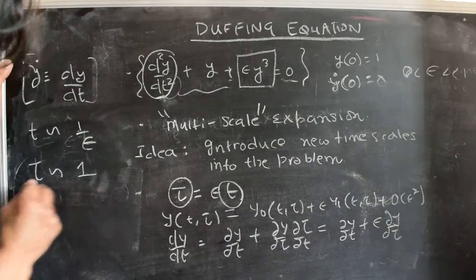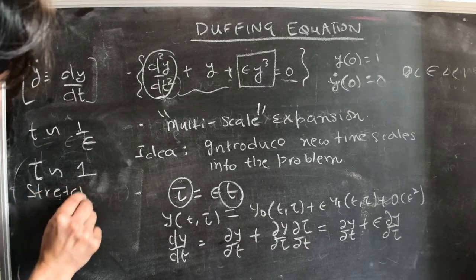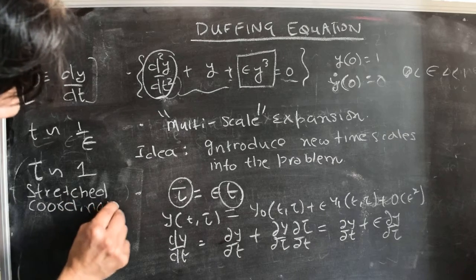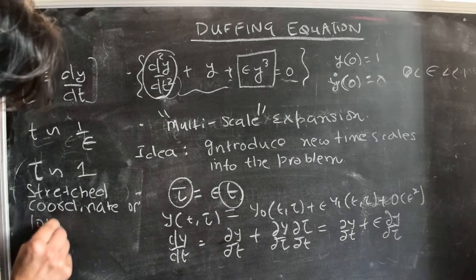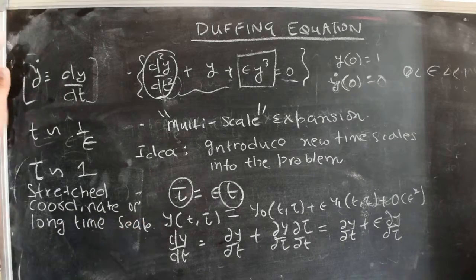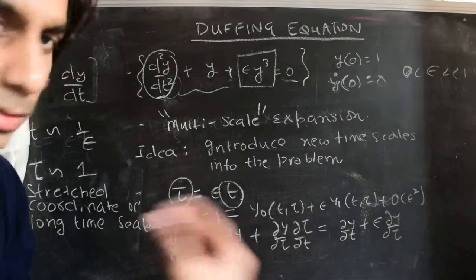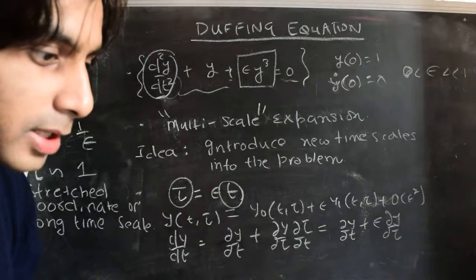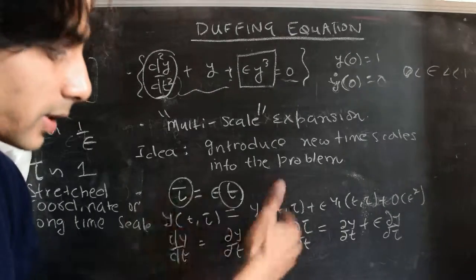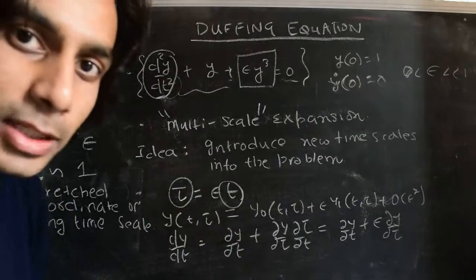So those are the basic ideas. Now let's do the algebra. In the next part of the video, we'll work out how to solve the differential equation, given that we're thinking of y as a function of two time variables t and tau. See you in the next part of the video. Thanks.